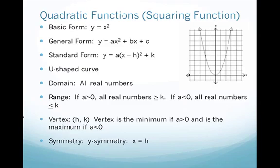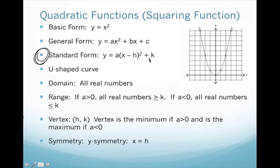A quadratic function — the book also refers to this as a squaring function, but you know this as a quadratic function. For it to be a quadratic function, it has to be in the form y equals x squared. Your basic form is y equals x squared. General form is y equals ax squared plus bx plus c. The standard form — your most useful form — gives you your vertex: y equals a times (x minus h) squared plus k, where a, h, and k are constants. In general, it's a u-shaped curve.